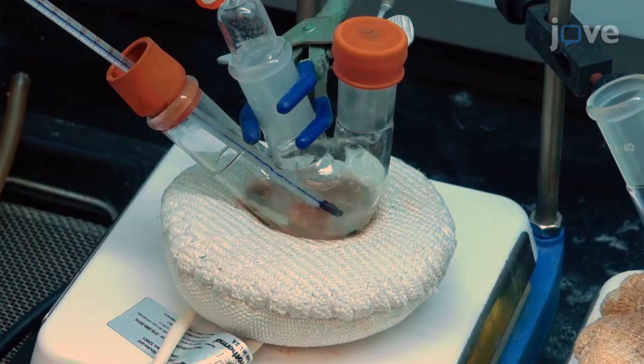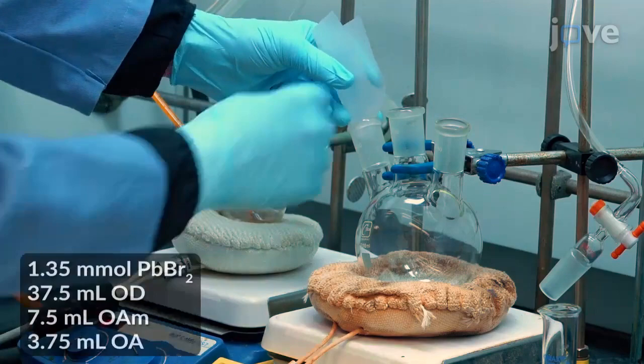To prepare the olelamine lead bromide precursor, add 1.35 millimoles of lead bromide, 37.5 milliliters of octodesin, 7.5 milliliters of olelamine, and 3.75 milliliters of oleic acid.